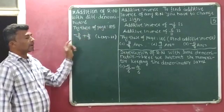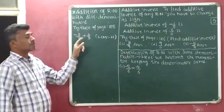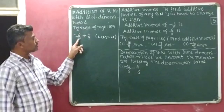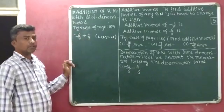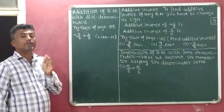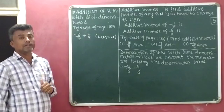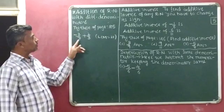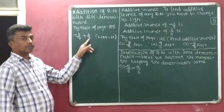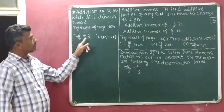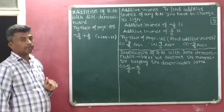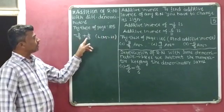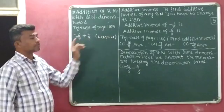The question is: minus 3 by 7 plus 2 by 3. Here both rational numbers have different denominators — denominator 7 and denominator 3. So first we will make the denominator the same using the LCM method. The LCM of 7 and 3 is 21.